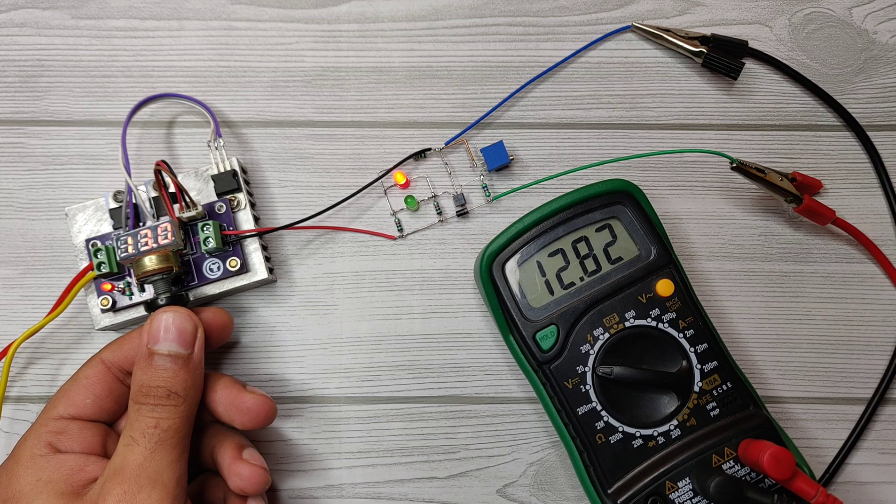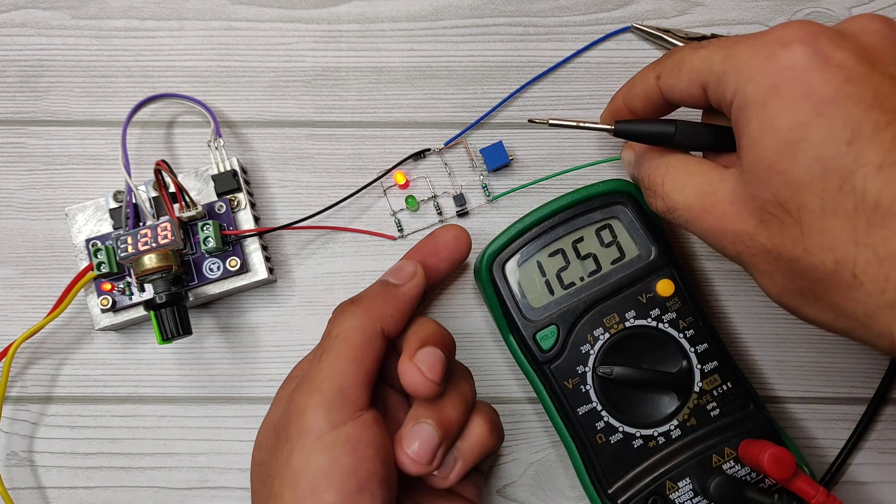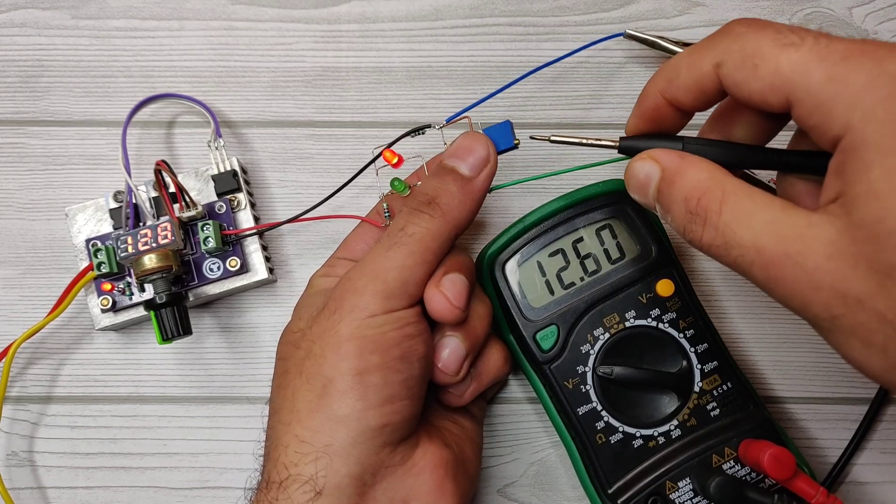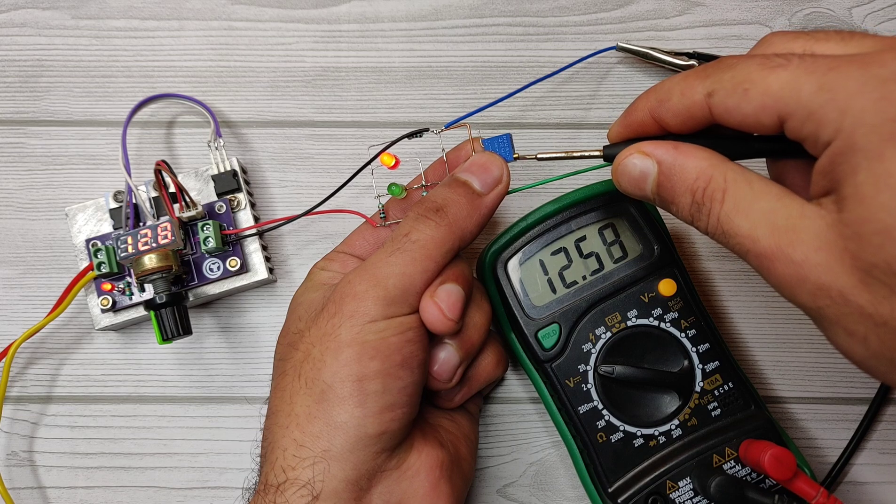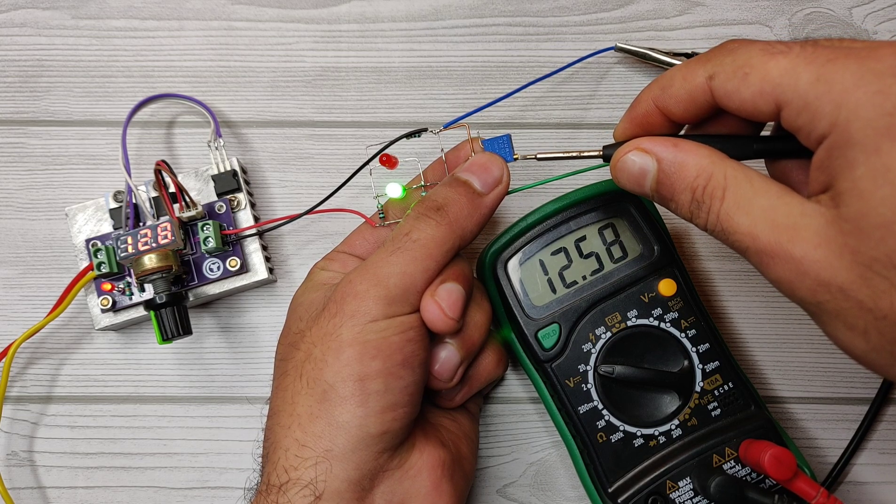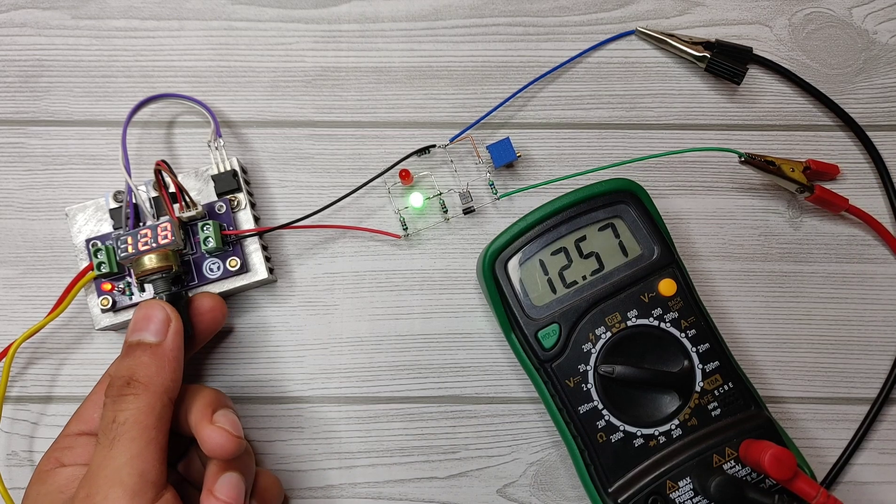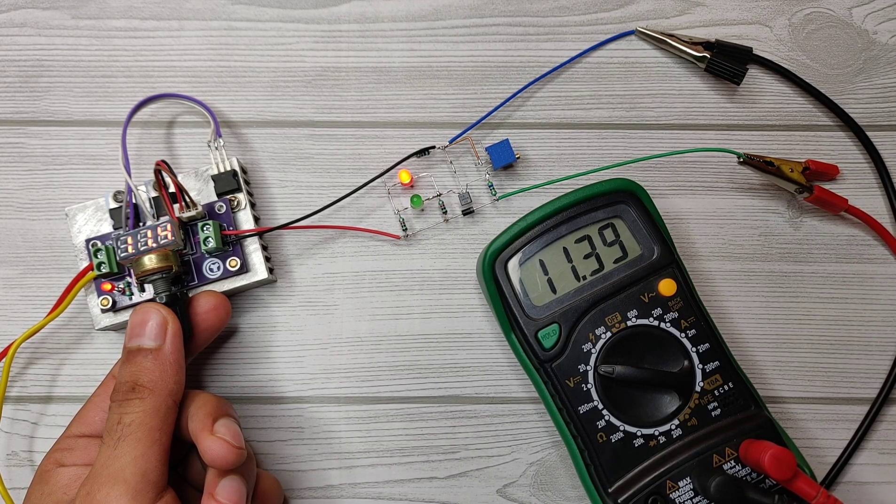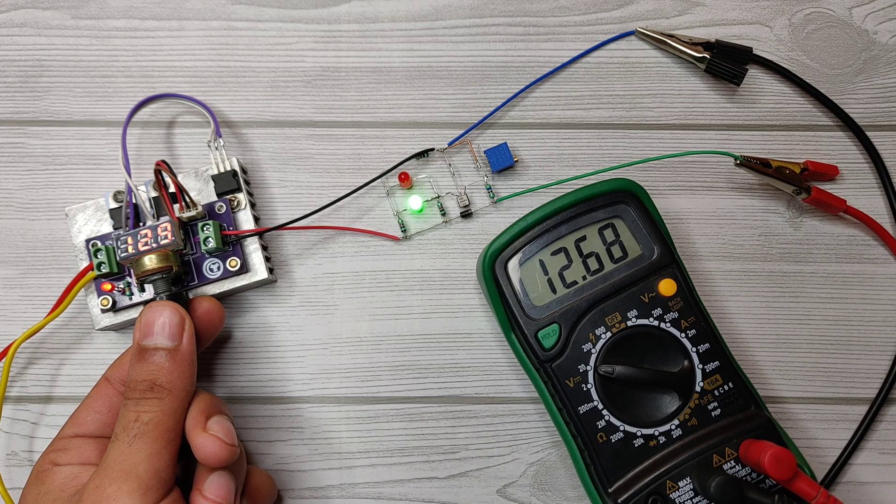Now suppose we calibrate it for 12.6 volts. Set the output at 12.6 volts, use a screwdriver and adjust the potentiometer clockwise till the green LED turns on. And as you can see, the red LED remains on if below 12.6 volts, and the green LED turns on at 12.6 volts.